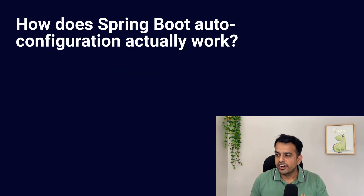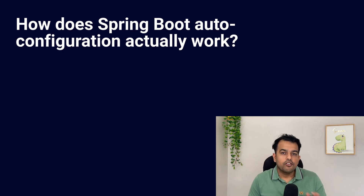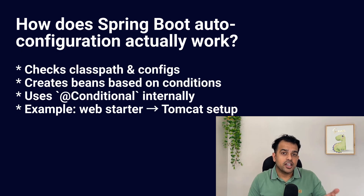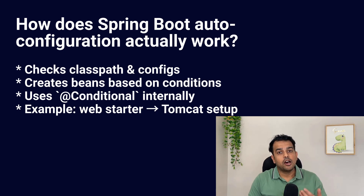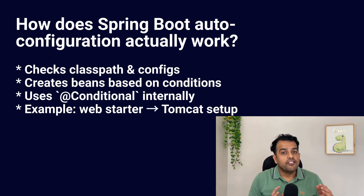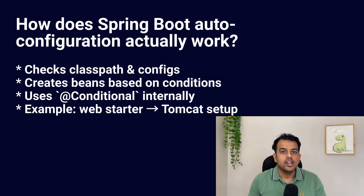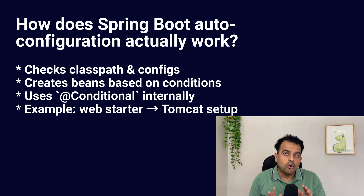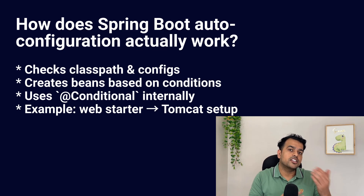How does Spring Boot auto configuration actually work? Auto configuration is a feature provided by Spring Boot. It checks what is already present in your project — the dependencies, available configuration — and based on that, it decides which beans to create automatically. It looks at classpath dependencies, properties, and default settings. For example, if Spring sees a web starter, it sets up Tomcat and DispatcherServlet automatically. This whole process is driven by the @Conditional annotation inside Spring Boot.